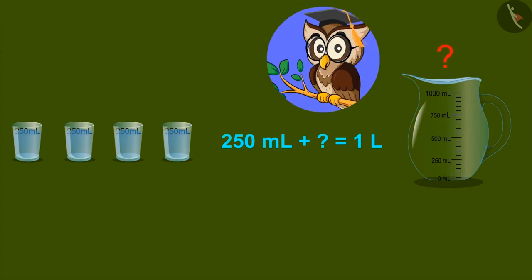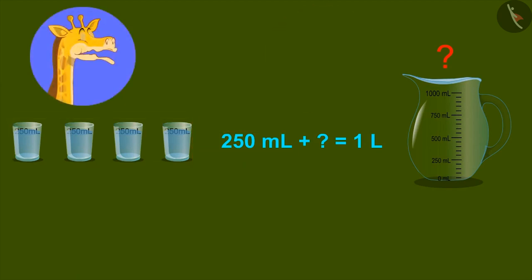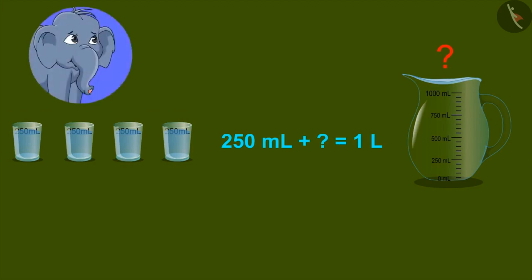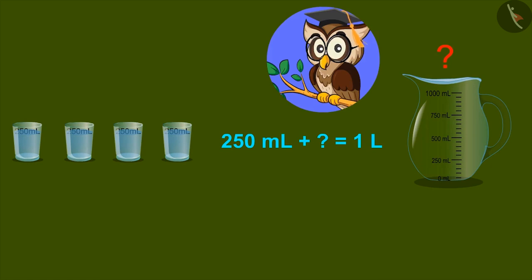For example, do you think that glasses of 250 ml can be combined to form one liter? Yes, it can be made. No, I don't think so. One liter can be made out of 250 ml. So, let's see how 250 ml and other units can be combined to form a liter.